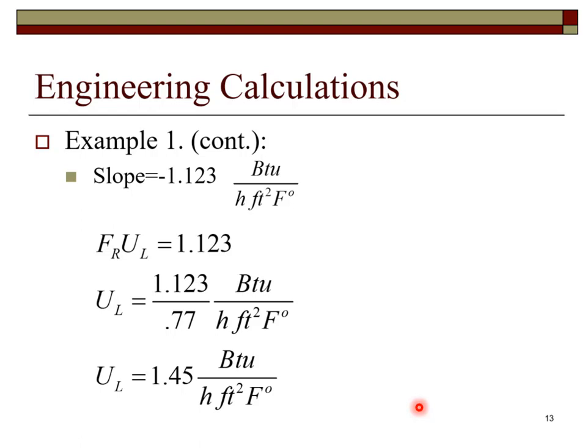With F sub R known, we can calculate the value of U sub L to be 1.45 BTUs per hour foot squared degree Fahrenheit.